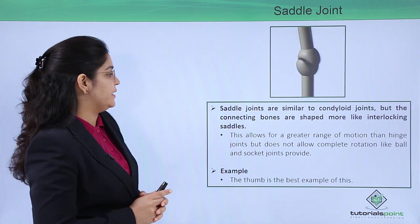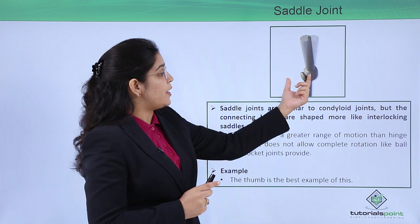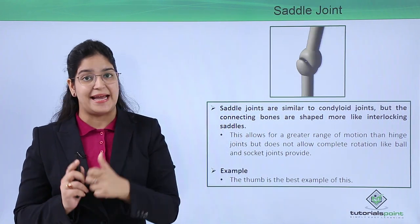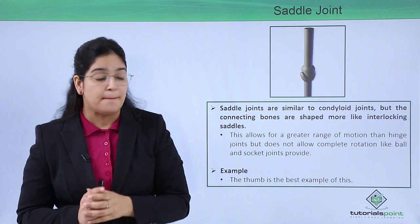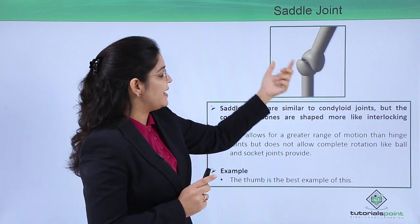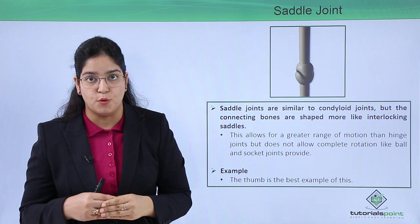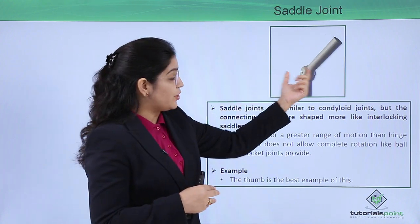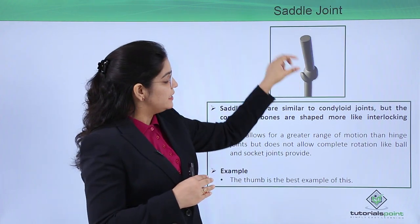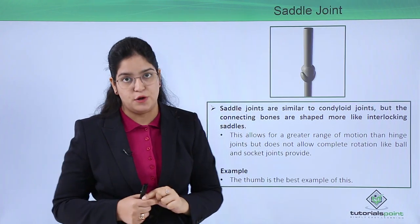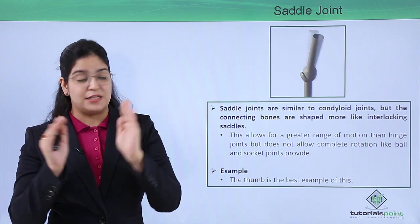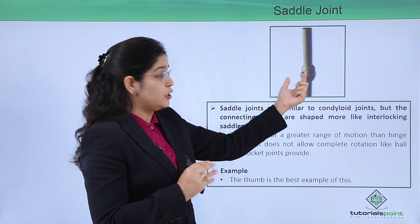Now this saddle joint almost looks like and functions like a condyloid joint, but here flexibility is more and interlocking is more. In the condyloid joint, the connection is at an upper layer, but in saddle the connection is interlocked.